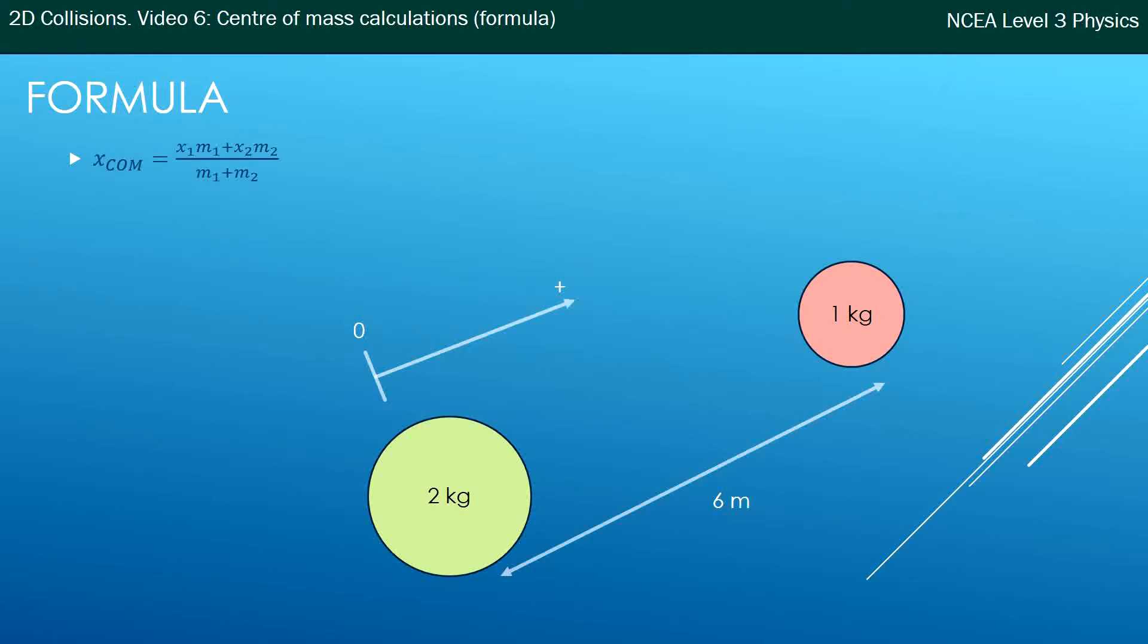So putting the numbers into this case we get the 2 kg object at the origin so its position is 0 times 2 kg, the other one's 6 meters and positive 6 meters away from the origin so it's plus 6 times 1 kg and the sum of the objects is 2 plus 1.